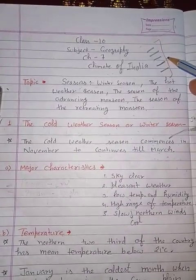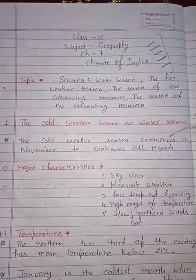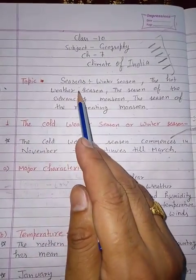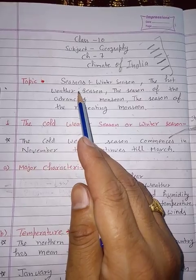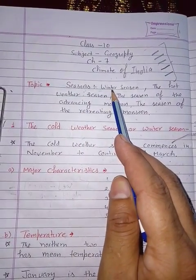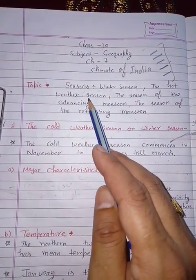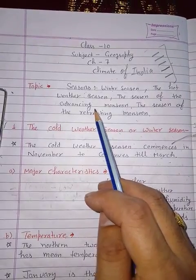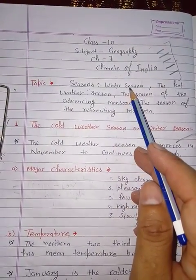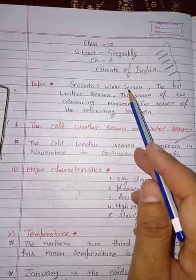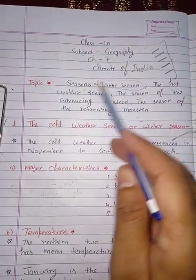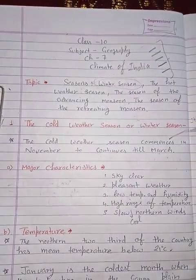Today we discuss the topic of seasons. Basically, there are four seasons: first is winter, summer, monsoon, and retreating monsoon. We will discuss today only one season — winter season — in detail, and further in the next lecture.